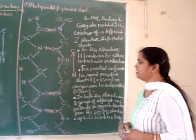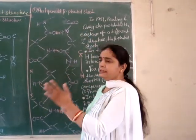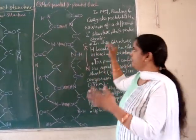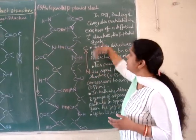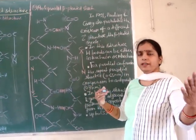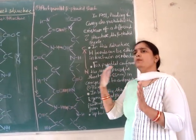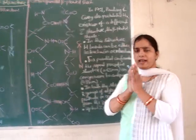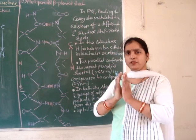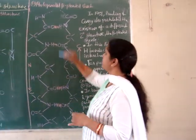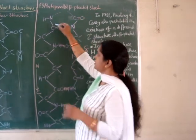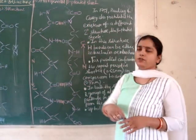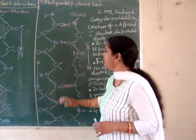In the anti-parallel beta-pleated sheet structure, both chains run in opposite directions — one chain runs N to C in one direction and the adjacent chain runs N to C in the opposite direction. This means opposite groups face each other: the amino group of one polypeptide chain and the carboxyl group of the adjacent chain interact. There is less distance between the two chains, and hydrogen bonds are formed between the carbonyl oxygen of one chain and the amide hydrogen of the adjacent chain.